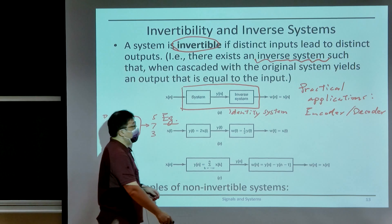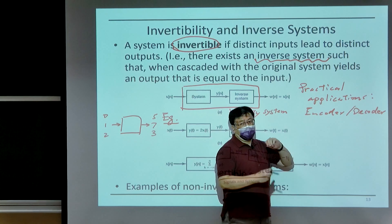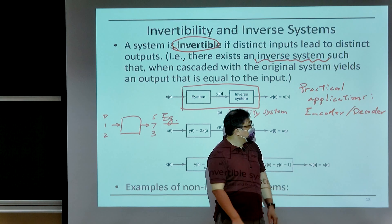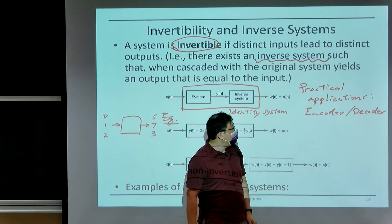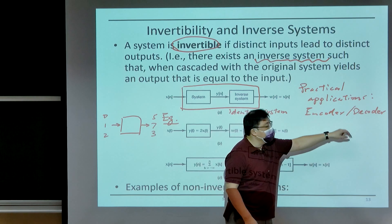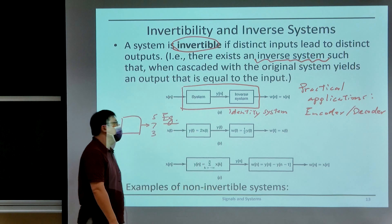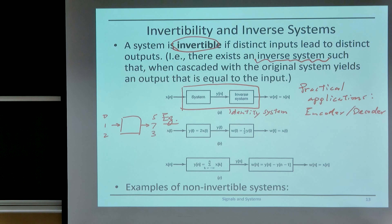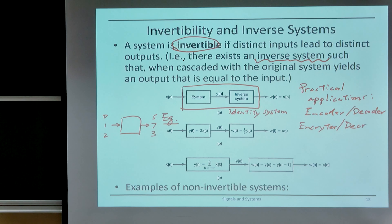In a communication system, an encoder maps your message to a codeword that can be sent through the channel, and the decoder takes the codeword and converts it back to the message. Or if you're looking at a security system or something like an online purchase system, you may have an encryptor and a decryptor.